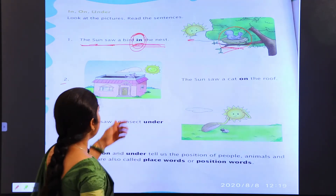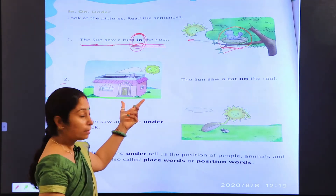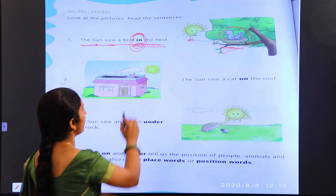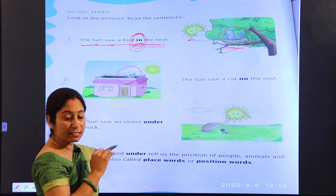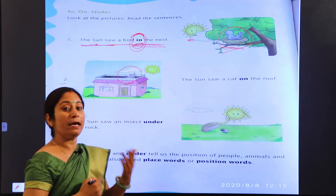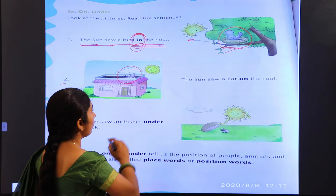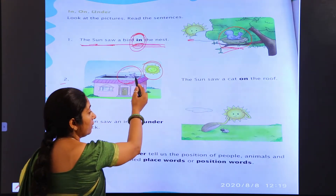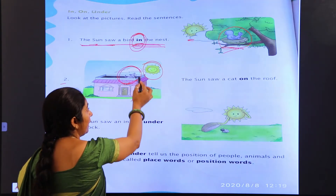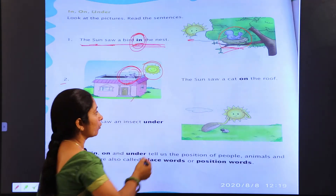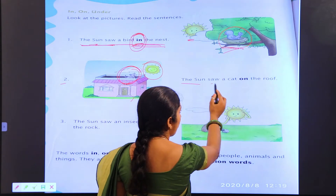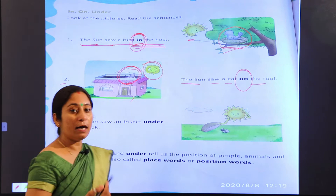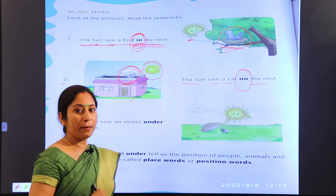Second one: you see there is a house. On the roof — roof means chhat — chhat par aapko ek cat nazar aa rahi hai. Woh chhat ke upar hai. Sun kya dekhta hai? Is ghar ke upar, chhat par ek cat baithi hui hai. The sun saw a cat on the roof — on the roof, roof ke upar baithi hui hai.